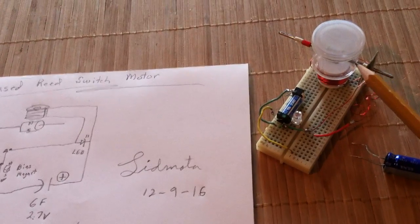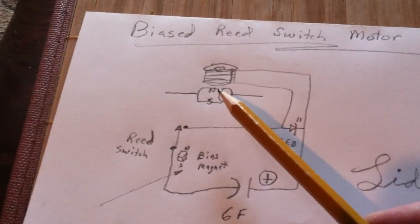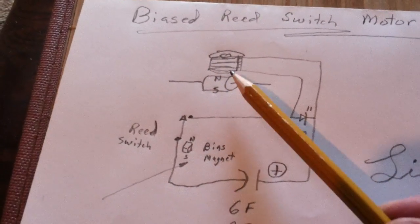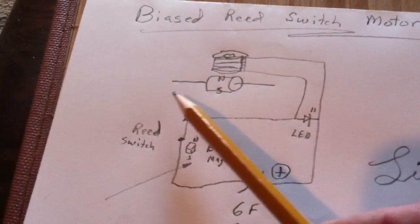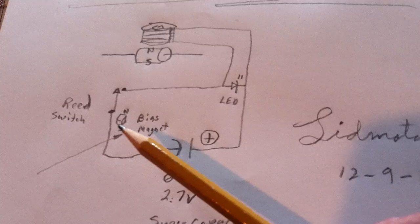A piece of coat hanger and then a ring magnet that's magnetized diametrically on the outside faces. Usually they're magnetized like this, but this is on the outside and it's just a reed switch pulse motor.